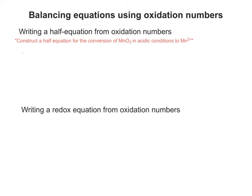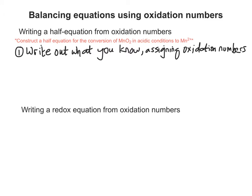So the first example would be construct a half equation for the conversion of MnO2 in acidic conditions to Mn2+. So the first step is to write out what you know, assigning oxidation numbers as you go.